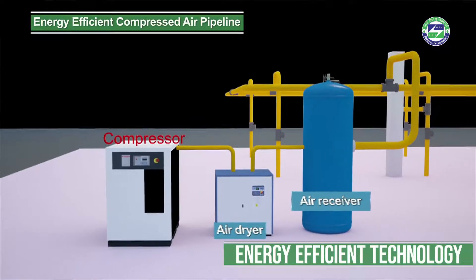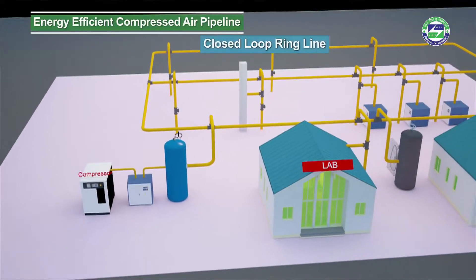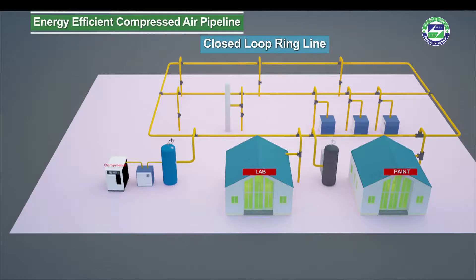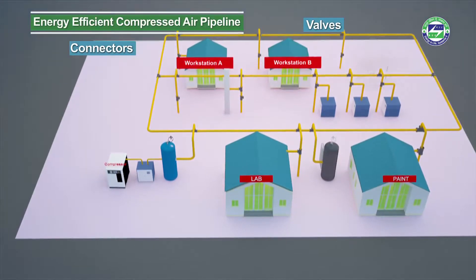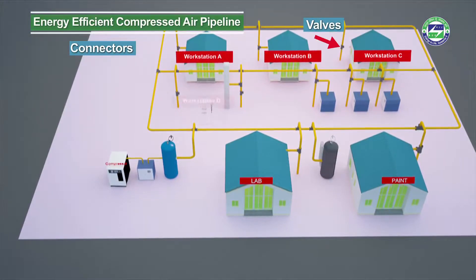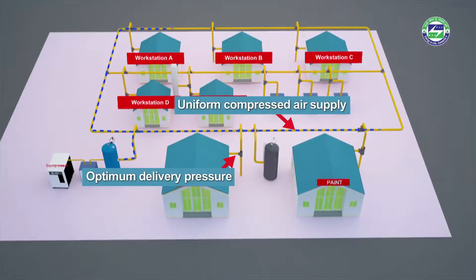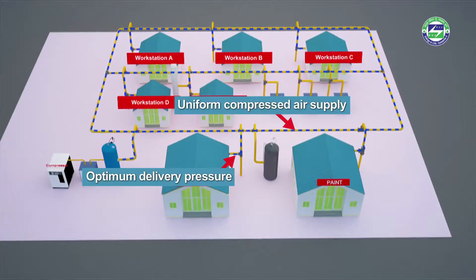The ring main system is an energy efficient alternative in piping. The design includes a closed loop ring line along the area where compressed air consumption takes place. Branch pipes connect the loop to various consumption points, providing uniform compressed air supply despite heavy intermittent usage.